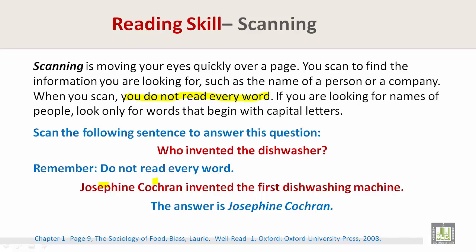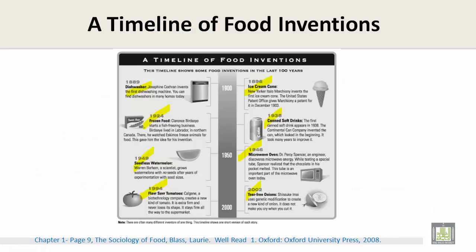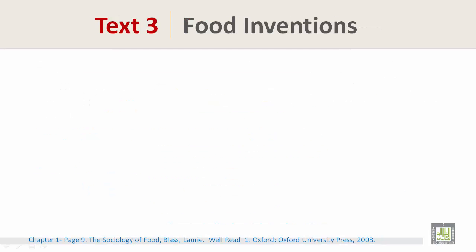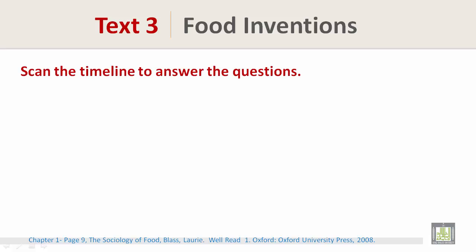Joseph Cochran invented the first dishwashing machine. The answer is Joseph Cochran. On the timeline, we can find the dishwasher entry which states 'Joseph Cochran invents the first dishwashing machine.' You can find dishwashers in many homes today. Now, scan the timeline to answer the following questions.